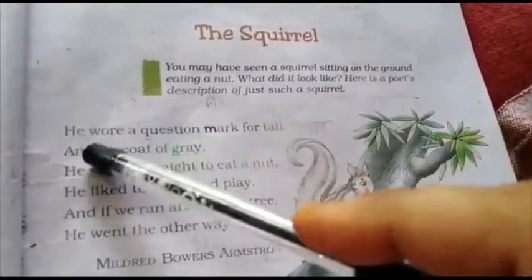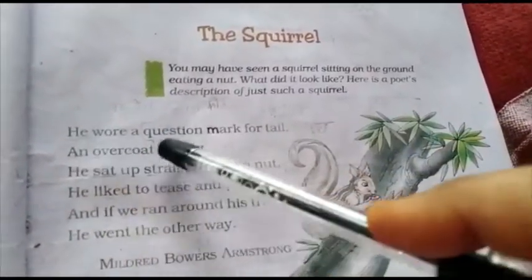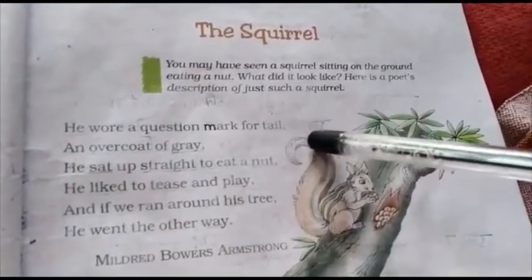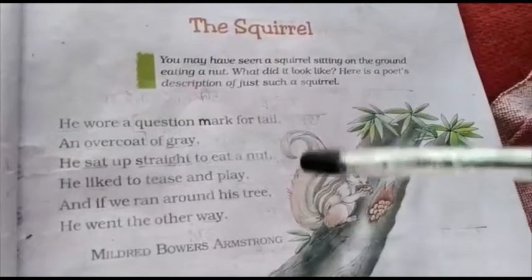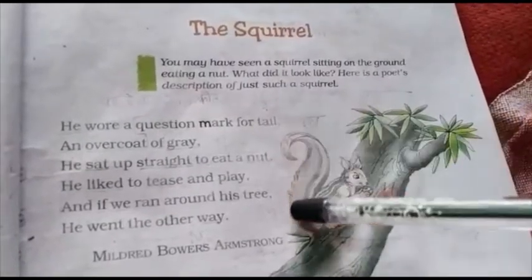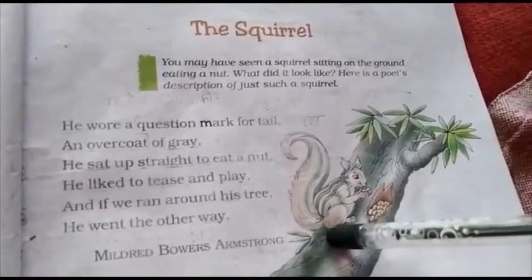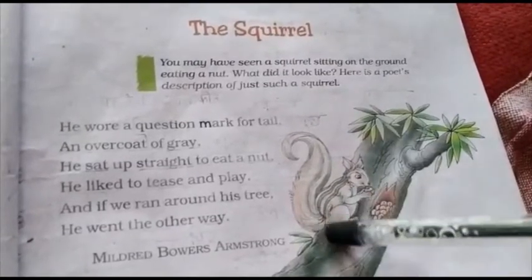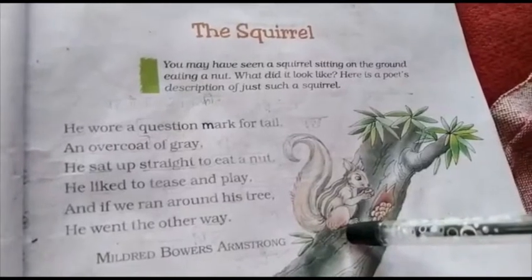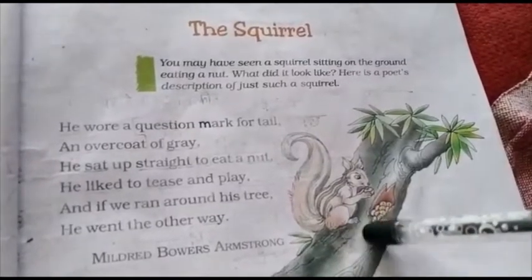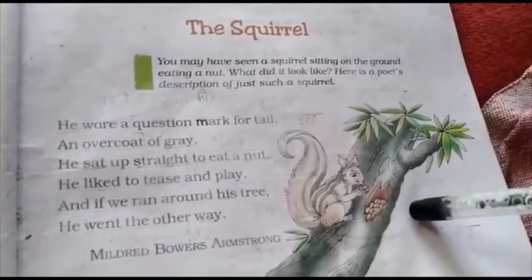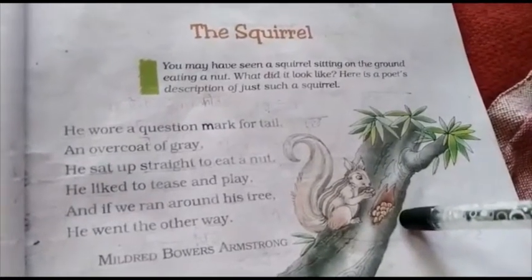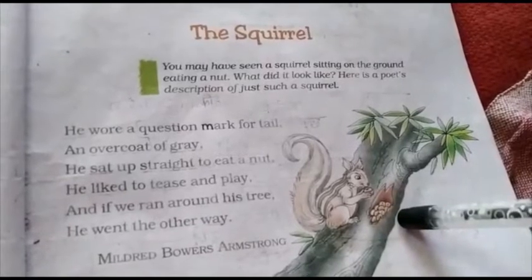Now I will go to your book. 'He wore a question mark for tail' — this squirrel has put a question mark on his tail. 'An overcoat of grey' — his body is grey in color, so it seems like it has put a big overcoat on. 'He sat up straight to eat a nut' — he is sitting straight and eating nuts. 'He liked to tease and play' — and if we ran around his tree.